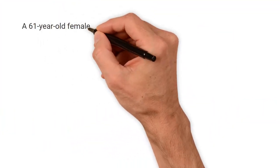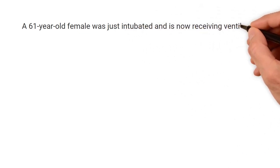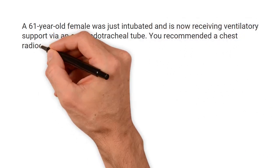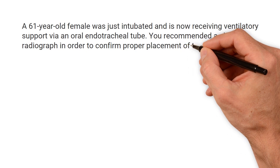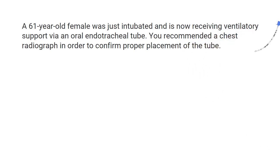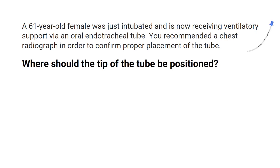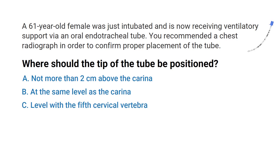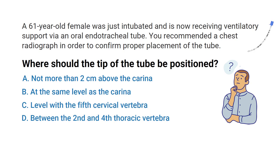A 61-year-old female patient was just intubated and is now receiving ventilatory support via an oral endotracheal tube. You recommended a chest radiograph to confirm proper placement of the tube. Where should the tip of the tube be positioned? A) not more than two centimeters above the carina, B) at the same level as the carina, C) level with the fifth cervical vertebrae, or D) between the second and fourth thoracic vertebrae. Do you know the answer? Let's break it down.